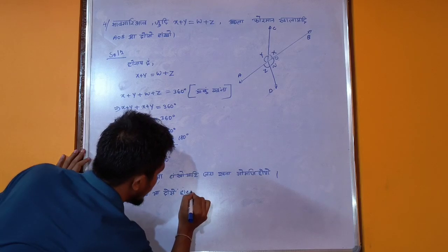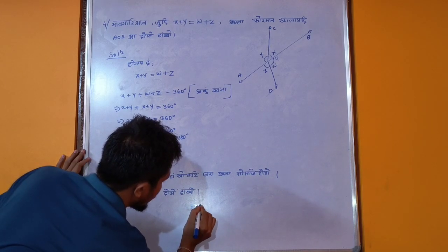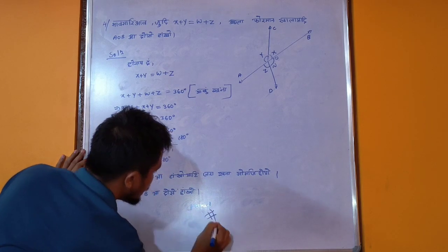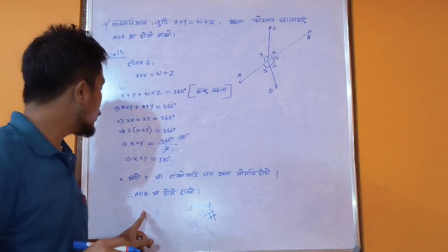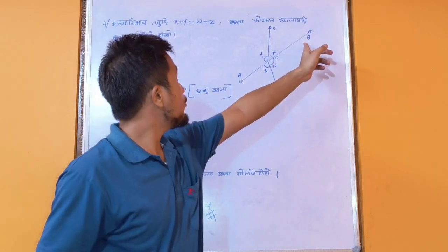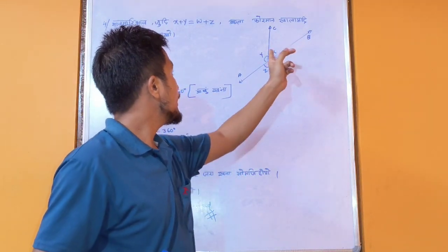You can show X that are A O B angle. A O B angle.